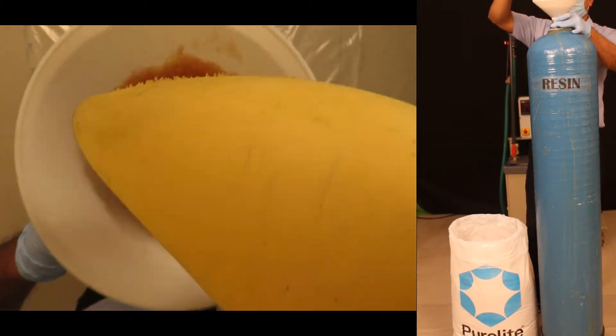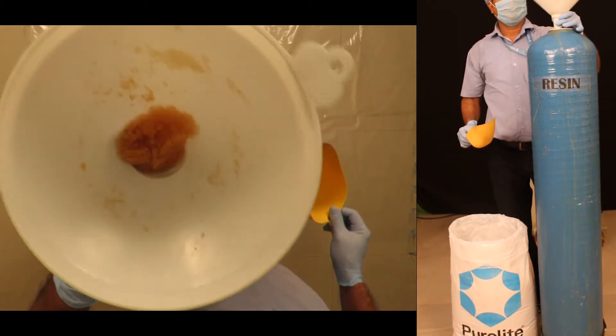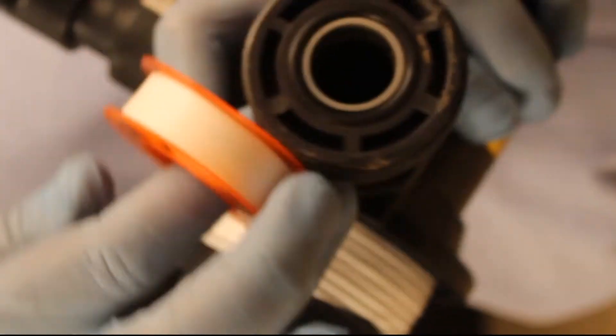Fit the upper cap properly onto the pipe and tighten the cap. Use teflon tape to avoid any water leakage and attach the resin tank to the DM plant.